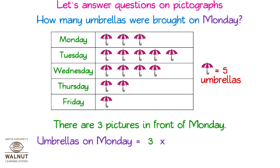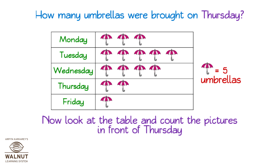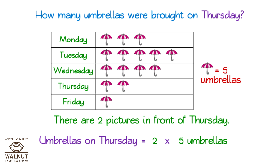Umbrellas on Monday equals three symbols, so three into five umbrellas is equal to fifteen umbrellas. How many umbrellas were brought on Thursday? Look at the table and count the pictures in front of Thursday. There are two pictures in front of Thursday, so two into five umbrellas is equal to ten umbrellas.